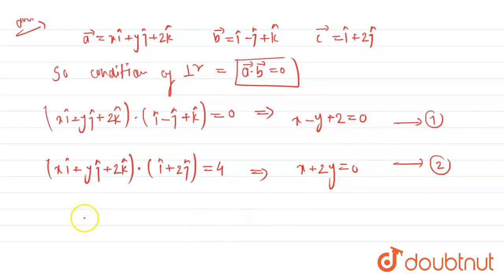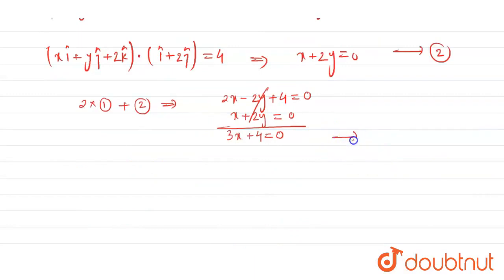So now we will get 2 multiplied by equation 1 plus equation 2. So हमें यहां से मिलेगा 2x minus 2y plus 4 equals to 0, और यहां हमें मिला x plus 2y equals to 4. So finally यहां से y cancel हो गया और यहां पर 3x plus 4 equals to 0 हो गया, और यहां से हमें x की value मिली minus 4 by 3.